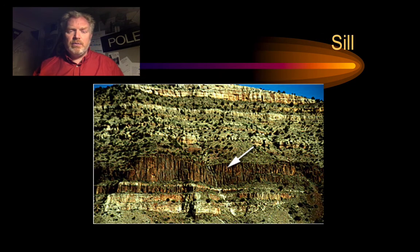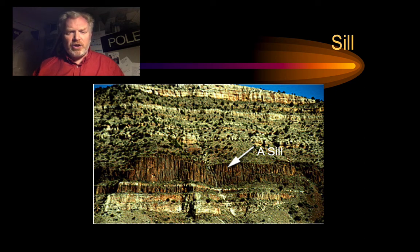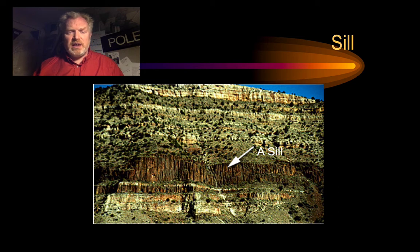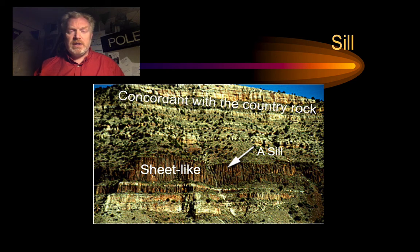A sill is a little more subtle. I've labelled it up here because it's not perhaps immediately obvious where it is. This darker-coloured band with vertical structures called columnar joints shows us it's an igneous rock. You can see that this slab of igneous rock follows the layering we can see in the rest of the cliff — it's a sheet-like body, but this time it's concordant with those layers.